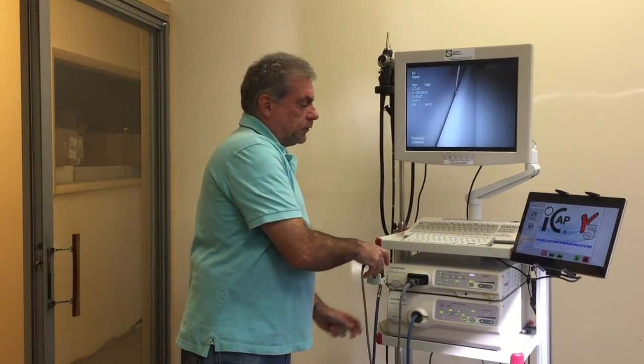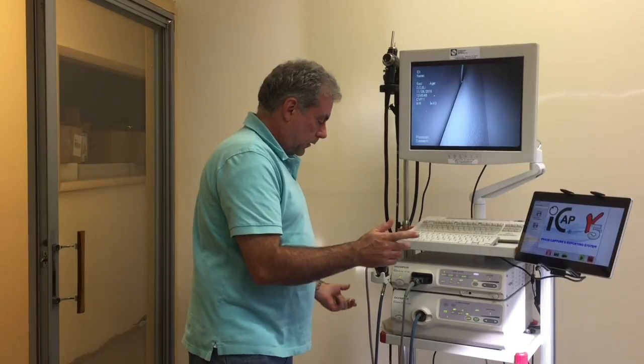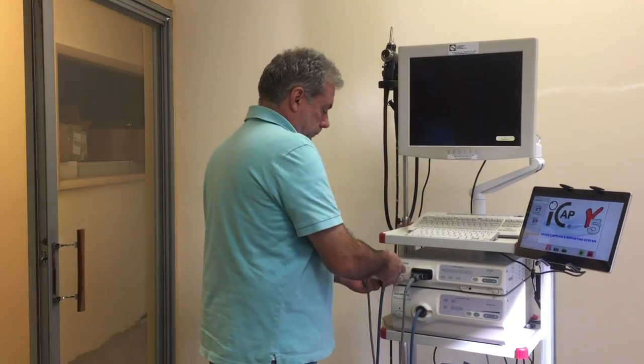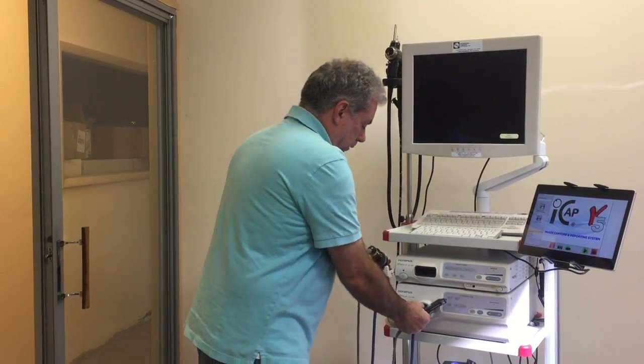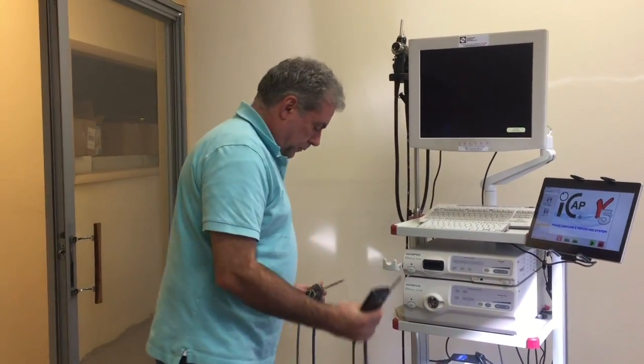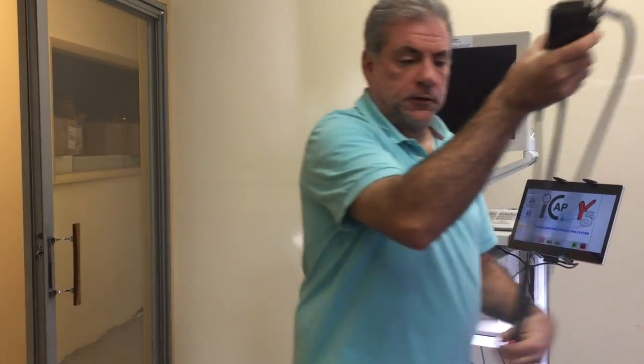Now I'm going to switch it to flexible. So we'll just turn off the system, disconnect the camera, disconnect the light cable, and put it off to the side and grab the scope.